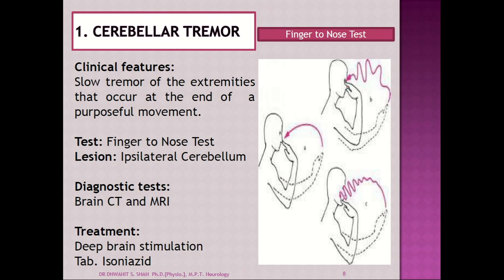First is the cerebellar tremor. You will find a slow tremor of the extremity that occurs at the end of a purposeful movement. When the movement is performed and you are reaching to the target, this type of tremor occurs. For example, in the finger-to-nose test, the finger does not reach the nose — it goes either above or below the nose; the target is not fulfilled. This happens because of an ipsilateral cerebellar lesion. Diagnosis is done by brain CT scan or brain MRI. Treatment is deep brain stimulation or medical treatment with clonazepam or isoniazid.